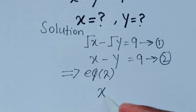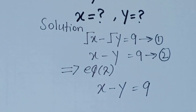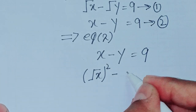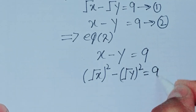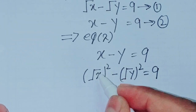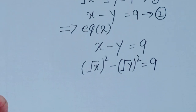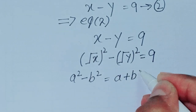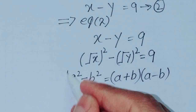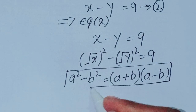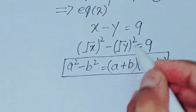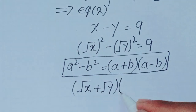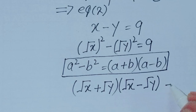Taking equation 2: x minus y is equal to 9. We can write this as square root of x whole squared minus square root of y whole squared equals 9. We know the formula a squared minus b squared equals a plus b into a minus b. Applying this formula, we get: square root of x plus square root of y, into square root of x minus square root of y, is equal to 9.